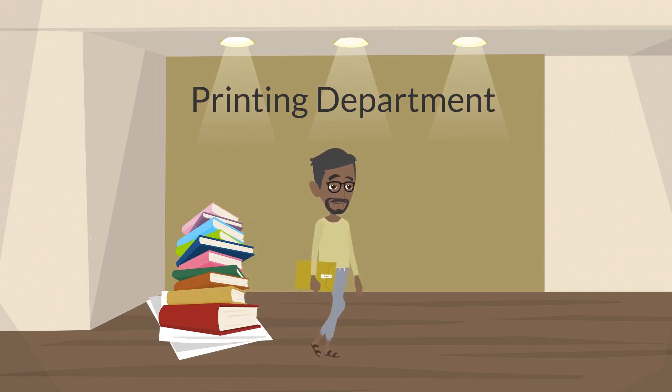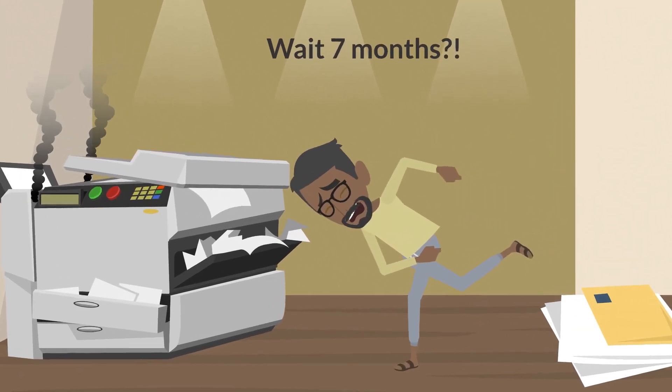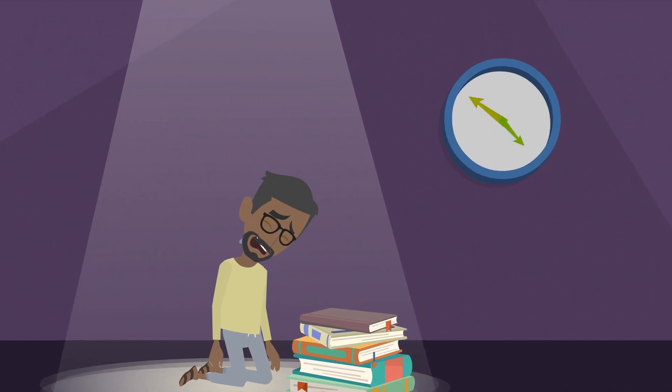He goes to the printing department but is told that due to a backlog he'll have to wait seven months. Adisa is devastated. What can he do?